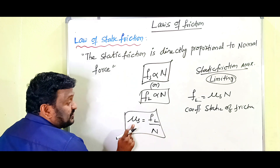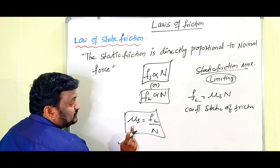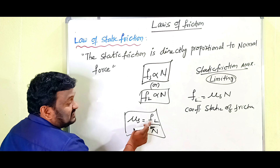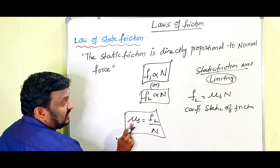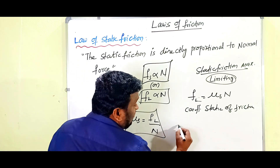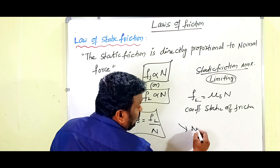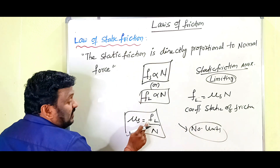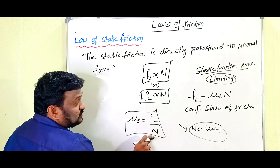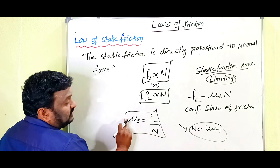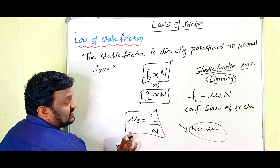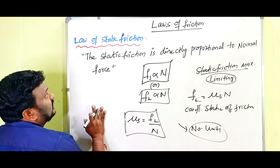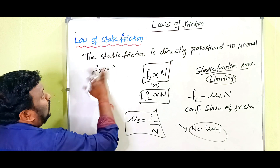Here, μs is called the coefficient of static friction. So μs = FL / N. The ratio of limiting friction to the normal force is called the coefficient of static friction. Since FL and N are both forces, μs is a dimensionless and unitless quantity. This concludes the law of static friction.